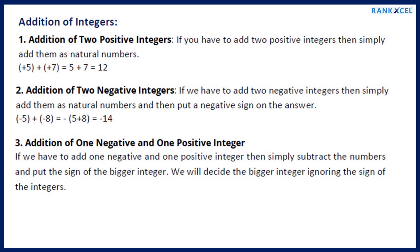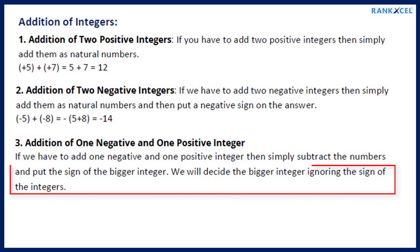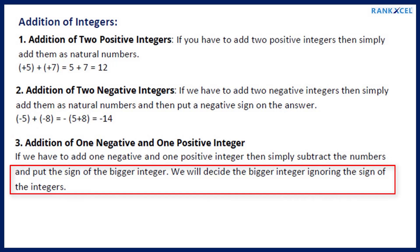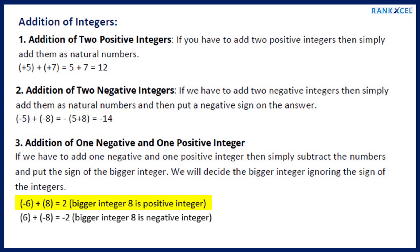Rule 3 — Addition of 1 negative and 1 positive integer: Simply subtract the numbers and put the sign of the bigger integer, deciding the bigger integer by ignoring the signs. Example: minus 6 plus 8 equals 2 (bigger integer 8 is positive). And 6 plus minus 8 equals minus 2 (bigger integer 8 is negative).